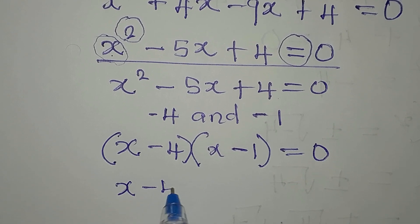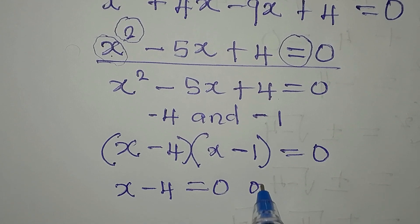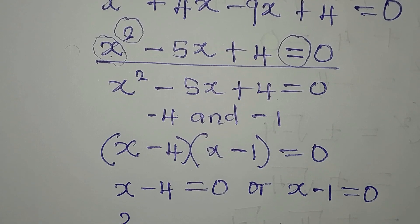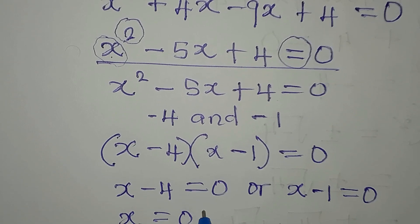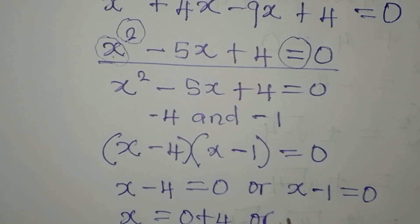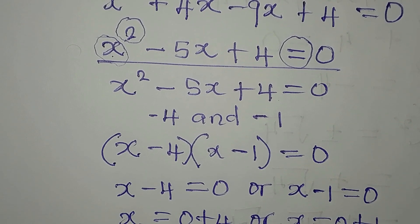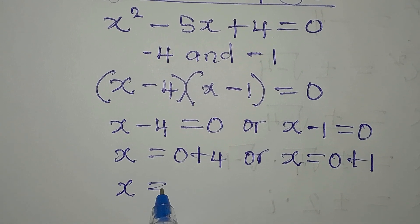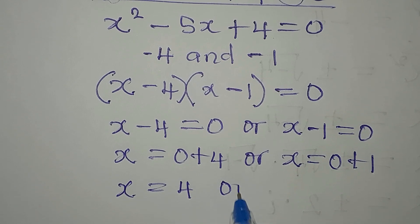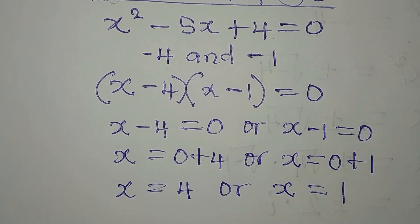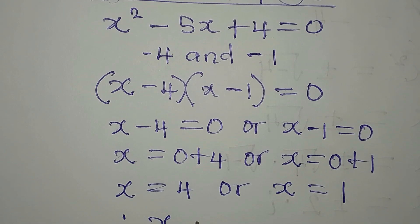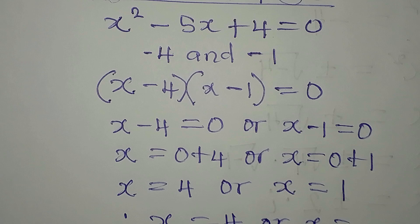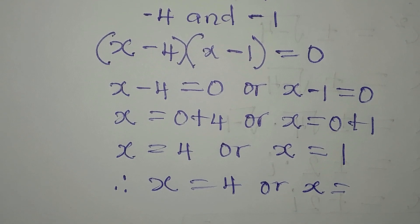Since we're multiplying two terms to get 0, either or both must equal 0. So x minus 4 equals 0 gives x equals 4, and x minus 1 equals 0 gives x equals 1. Therefore x equals 4 or x equals 1.